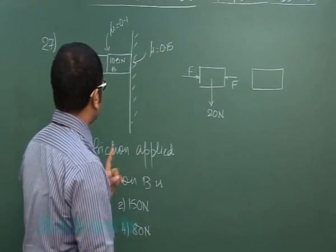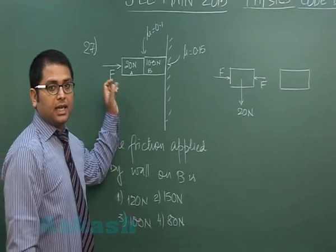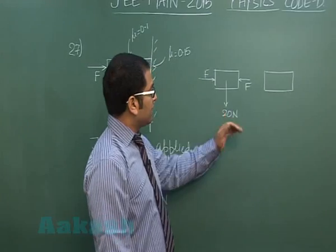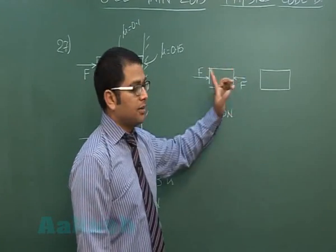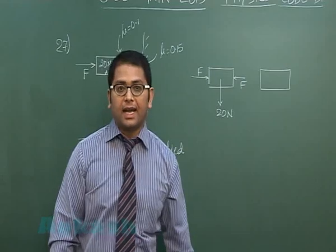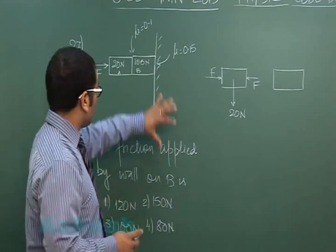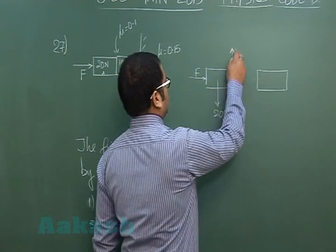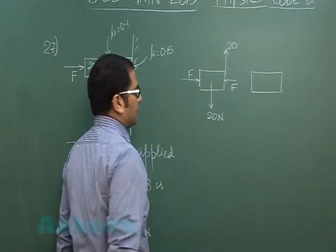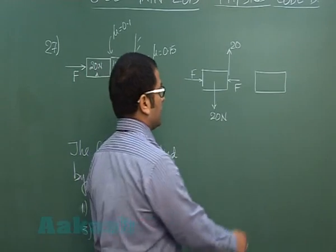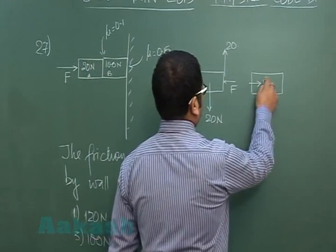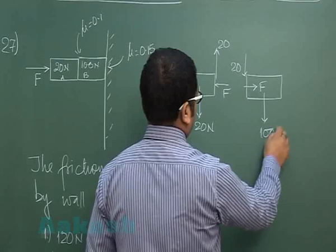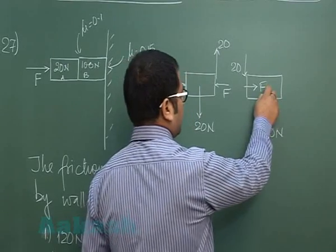Now particularly in this question, the value of F has not been given. If the value of F had been given, then we could have easily checked whether this force exceeds the limiting friction or not. Since that is not given, I have a single option to assume that the whole system is in equilibrium. So if this is in equilibrium, the friction here has to be 20 newton and that would be static in nature.